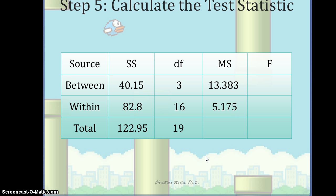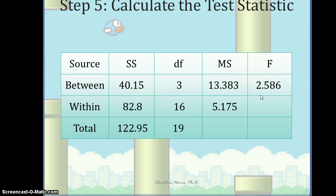We're not quite finished yet. Our final step is to get the F statistic. We've estimated the variance in the population using group membership and individual scores, and we get that ratio by taking mean squared between — the 13.383 value — divided by mean squared within, which is 5.175. That yields an F statistic of 2.586, completing step five of calculating the test statistic.